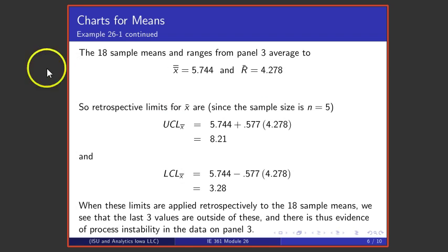If one takes the 18 sample means and ranges from that panel and averages, an average X-bar bar turns out to be 5.744. Now in that average there are three X-bars coming from those last three samples that we know physically came from a different process than the first 15, but we'll go ahead and pretend that we don't know that. The average R is 4.278, and so retrospective control limits for X-bar are going to be this X double bar plus or minus A₂ R-bar based on the sample size n equal to 5.